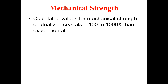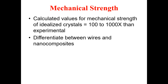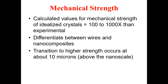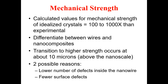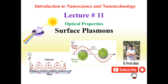The calculated value for mechanical strength of the Wulff crystal increases from 100 to 1000 times compared to the experimental value. The transition to higher strength occurs at about 10 microns, above the nanoscale. Two possible reasons are: a lower number of defects inside the nanowire, and pure surface defects. That's all for this lecture — in the next lecture we will move towards the optical properties of materials.